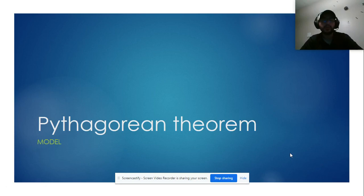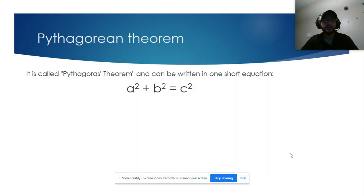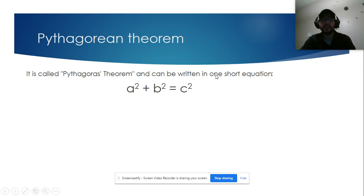Today we're going to learn about the Pythagorean theorem. It can be written as a short equation: a squared plus b squared equals c squared.